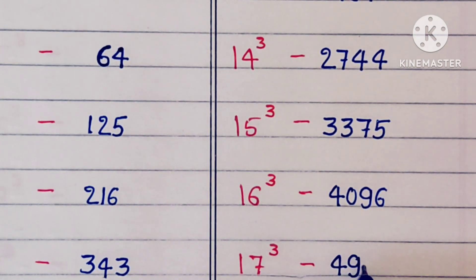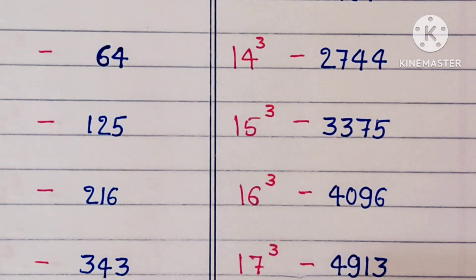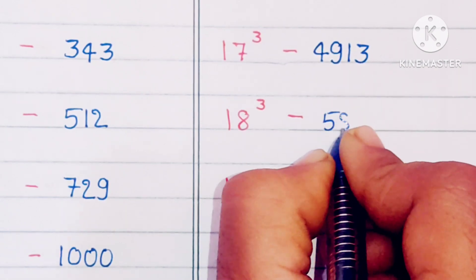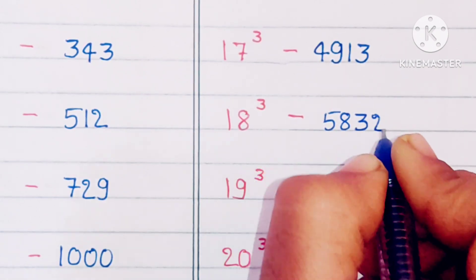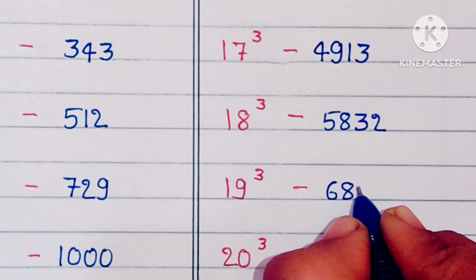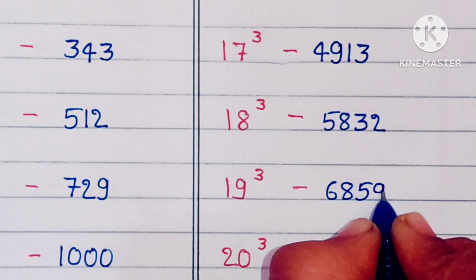17 cube is 4913, 18 cube is 5832, 19 cube is 6859.